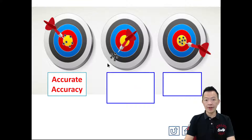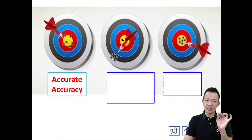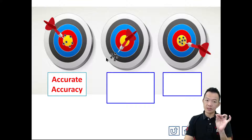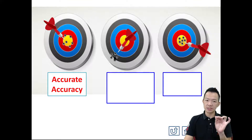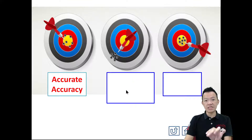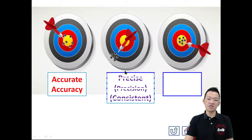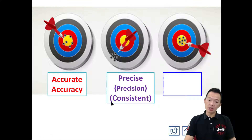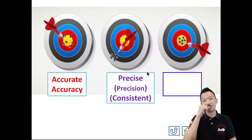Number two: for the second example, it is not accurate — it doesn't hit the center — but every time it is not accurate, it goes to the same position. So what I can say: precise — not accurate but precise. It has no accuracy but it is precise, or consistent — consistency is high.